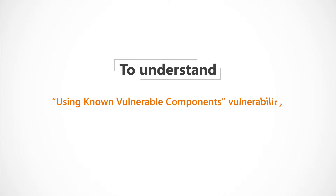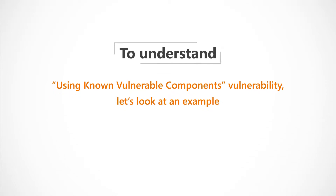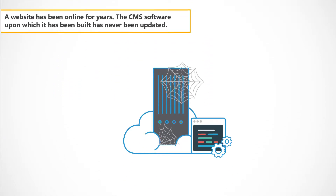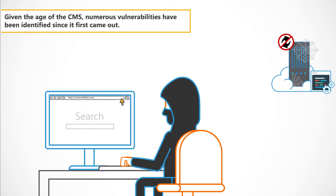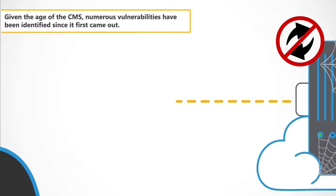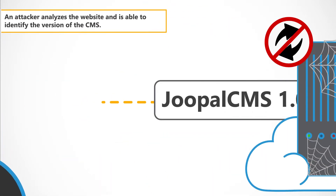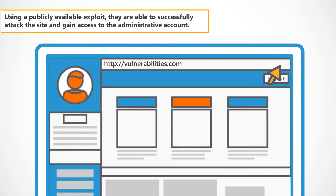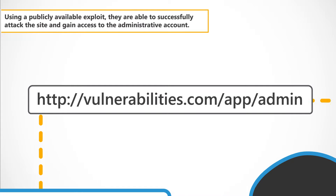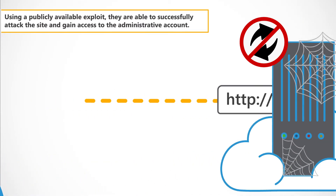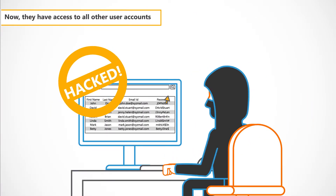To understand the using known vulnerable components vulnerability, let's look at an example. A website has been online for years, and the CMS software upon which it was built has never been updated. Given the age of the CMS, numerous vulnerabilities have been identified since it first came out. An attacker analyses the website and is able to identify the version of the CMS. Using a publicly available exploit, they are able to successfully attack the site and gain access to the administrative account, and now they have access to all other user accounts.